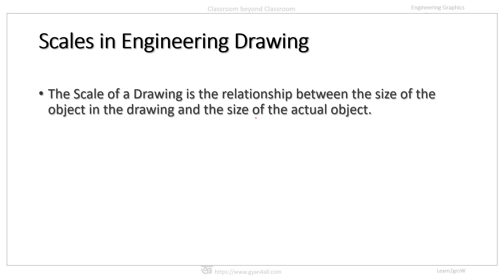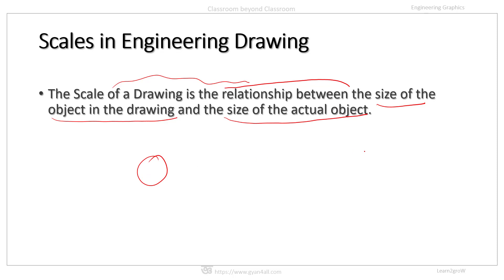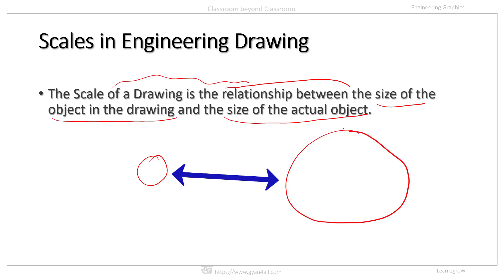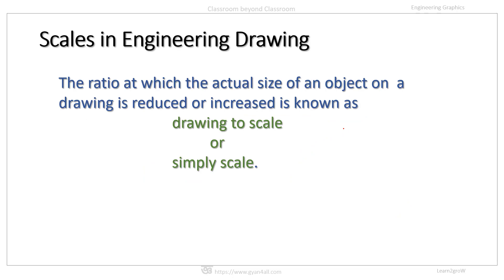Scales in engineering drawing. The word scale may have different meanings in engineering drawing. In drawing, a scale is a device to measure linear distance and create proportional linear measurement. The scale of a drawing is basically the relationship between the size of the object in the drawing and the size of the actual object. The ratio at which the actual size of an object on a drawing is reduced or increased is known as drawing to scale, or simply scale.